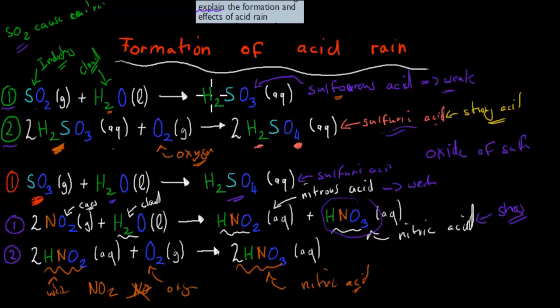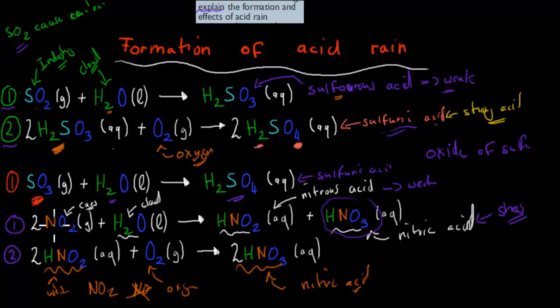You should remember all three pathways: sulfur dioxide, sulfur trioxide, and nitrogen dioxide — all three ways acid rain can be formed.